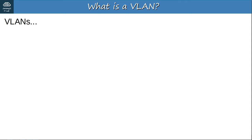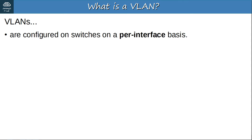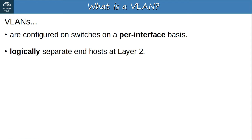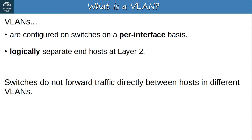Just a bit of review. VLANs are configured on switches on a per-interface basis. VLANs logically separate end hosts at layer 2. Although the hosts in the topology we looked at were physically connected to the same switch and therefore in the same broadcast domain, we used VLANs to logically separate them and put them in separate broadcast domains. Switches do not forward traffic directly between hosts in different VLANs — the switch must forward the traffic to a router. There are a couple of other methods of inter-VLAN routing that I will cover in a future video.